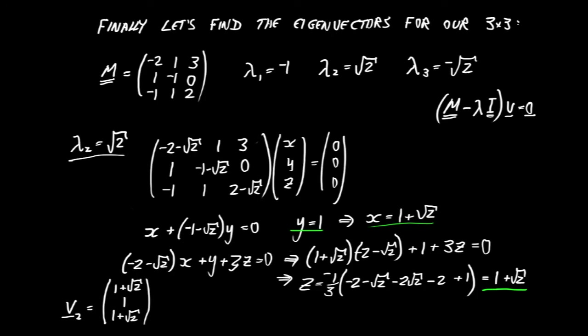We've found a compatible set of x, y, and z values, so we can write down an acceptable eigenvector: 1 plus root 2, 1, 1 plus root 2. That is the eigenvector that goes with eigenvalue lambda 2 equals square root 2. I use the same subscript 2 on the vector to make it clear that lambda 2 goes with vector 2.